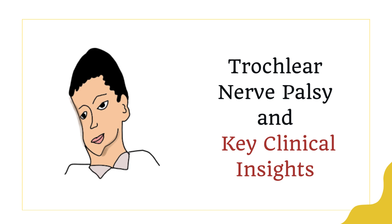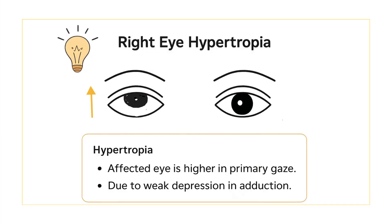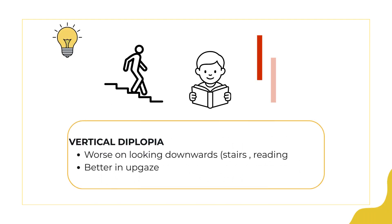After lesion localization, the video will be incomplete if we don't discuss the clinical features of fourth nerve palsy. Trochlear nerve palsy results from paralysis of the superior oblique muscle. The most prominent finding is hypertropia of the affected eye in primary position, due to loss of depression in adduction — the secondary action of the superior oblique. Because one eye is higher than the other, patients experience vertical diplopia where images appear one above the other. This diplopia is worse in down gaze.